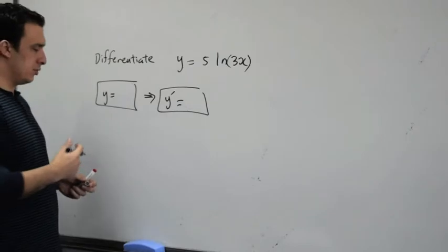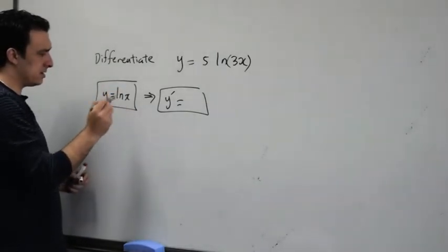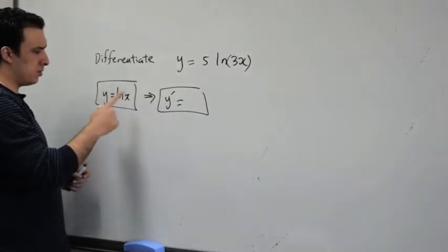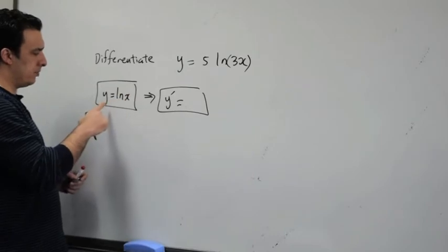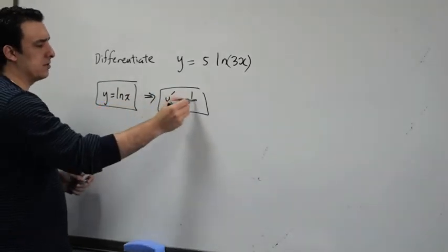The rule is: when y is equal to natural log x, the derivative, or y prime, of natural log x is 1 over x.